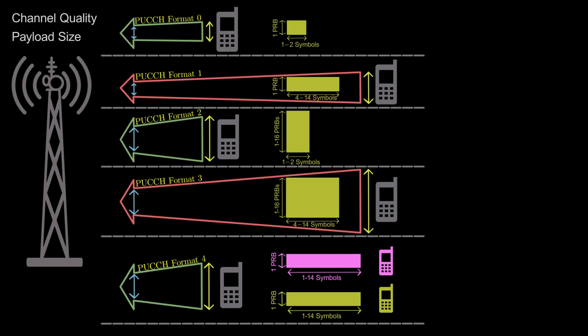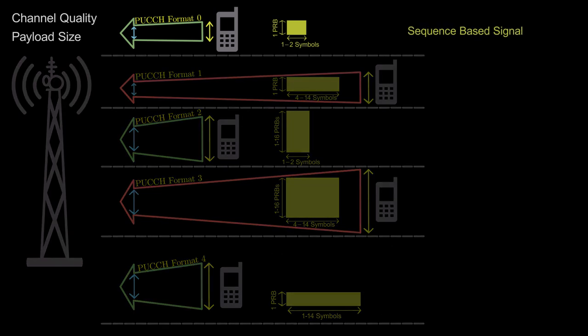As a final note, demodulation reference signal, otherwise called DMRS, are present in all PUCCH formats except PUCCH format 0. PUCCH format 0 is a sequence-based signal so that base station can use a non-coherent receiver. I will explain more about it in another video.